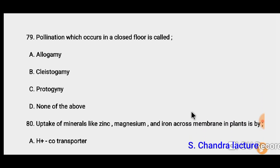Question 79: Pollination which occurs in a closed flower is called cleistogamy. In this condition the flower does not open, and the anther and stigma lie close to each other. The flower does not open, so this condition is called cleistogamy. The correct option must be B.